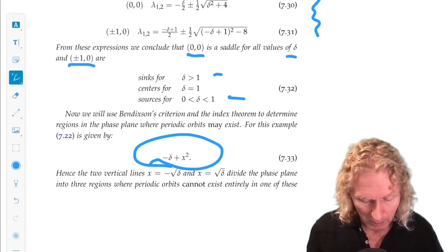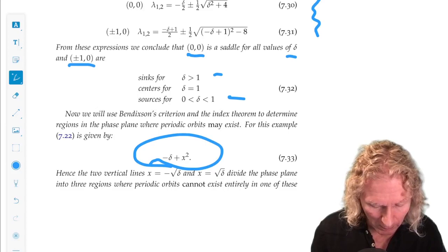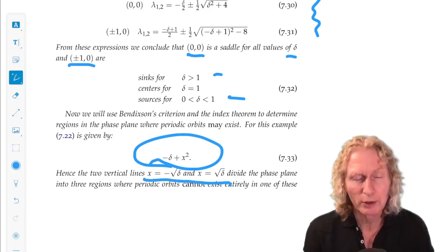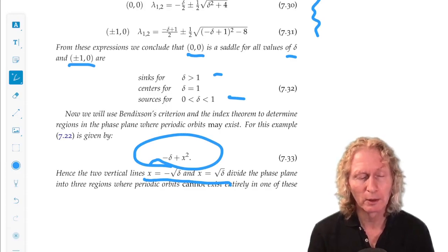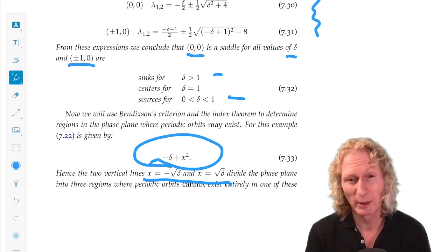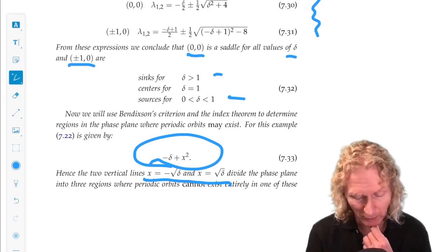So this expression vanishes at x equal square root of delta, x equal minus square root of delta. So now we see the only delta that needs to be positive for this example.